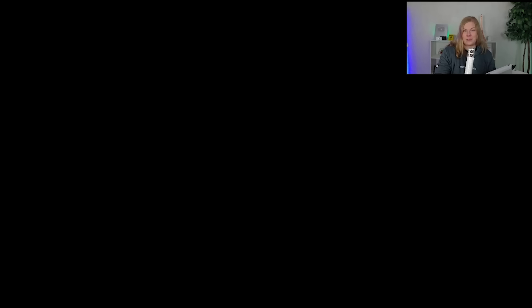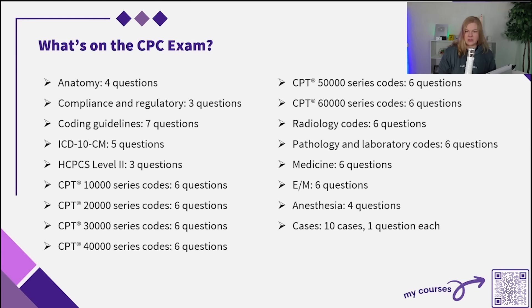If you've figured out ICD-10-CM and CPT, HCPCS isn't that difficult afterward. There are six questions each for the 10,000, 20,000, 30,000, 40,000, 50,000, and 60,000 CPT code series, six on radiology, six on pathology and labs, six medicine questions, six E&M questions, four on anesthesia, and then 10 cases.